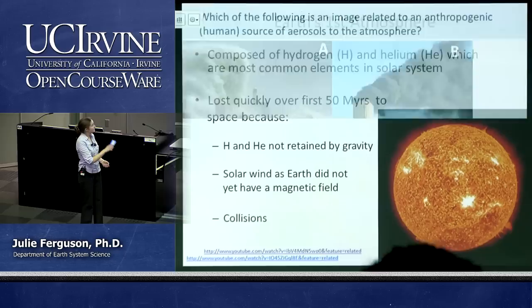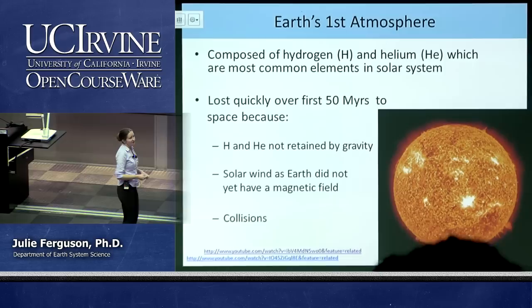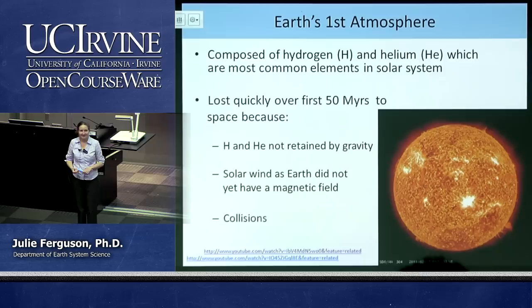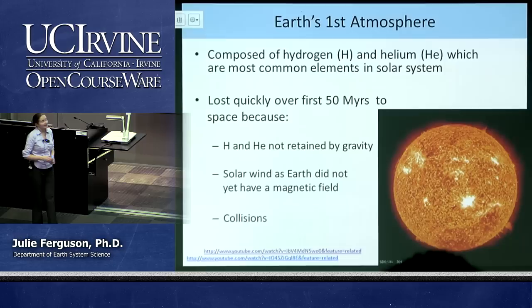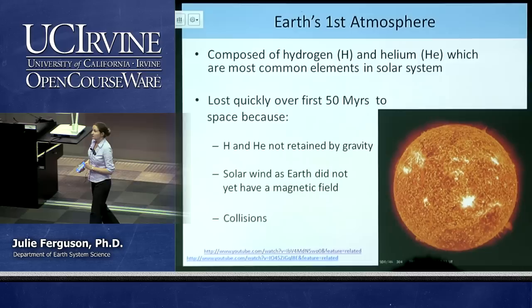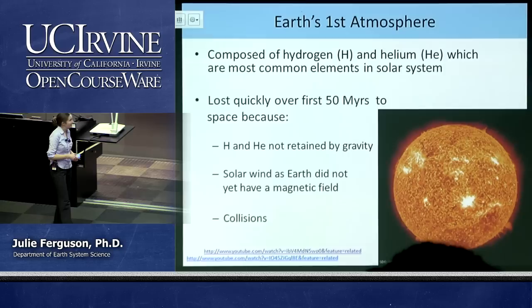Let's talk about Earth's first atmosphere. Does anyone know how old the Earth is? About 4.5 billion years. Just after Earth formed, it actually had an atmosphere composed entirely of hydrogen and helium — because they were the most common elements in the solar system. Our sun and gas giants like Jupiter and Saturn are mostly hydrogen and helium. But here on the terrestrial, rocky planets, we lost that early atmosphere very quickly in geological time — over the first 50 million years or so — because hydrogen and helium are the lightest elements and our gravity is just not strong enough to keep them.